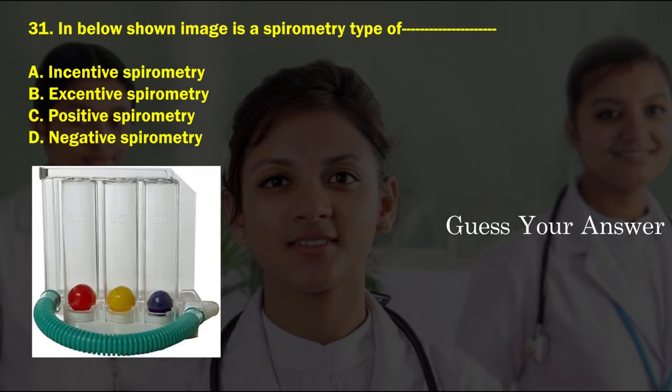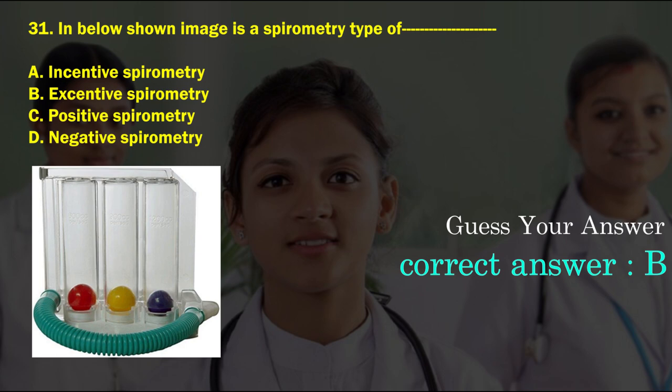In the below given image, the shown spirometry type — option A: incentive spirometry, option B: extensive spirometry, option C: positive spirometry, option D: negative spirometry. The correct answer is option A, incentive spirometry.